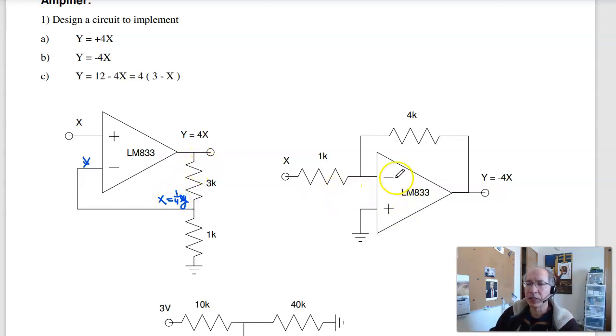For negative gain, that's an inverting amplifier. Here the input goes on the plus input. Here the input goes on the minus input. This creates an inverting amplifier. With the inverting amplifier, the gain is just the ratio, r1 over r2. So for a gain of minus 4, make that 4 to 1.